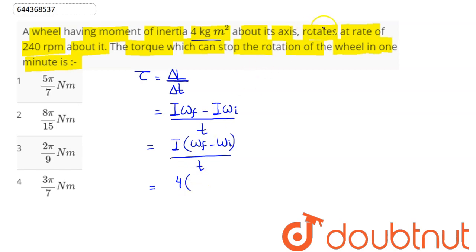kg meter square. Here it says finally stop, so we have omega f as zero. Initial omega is 240 revolutions per minute. So in one revolution we can say it is 2 pi radian and in one minute there is 60 seconds.